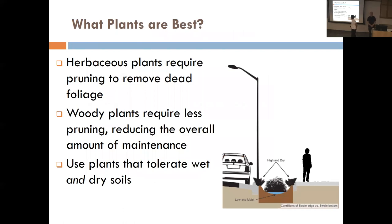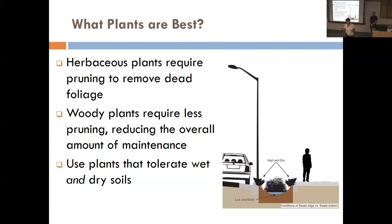What plants would be best? Herbaceous plants require pruning to remove dead foliage — that's not something we want to deal with. Woody plants require less pruning, reducing overall maintenance. Use plants that tolerate both wet and dry soils — because these soils are so well-drained, people in basins like this will think about wet tolerance but won't think about what happens in August when it gets dry. Most bioswales are planted with wet-tolerant plants, not considering that these are well-infiltrating soils that also need drought-tolerant plants.